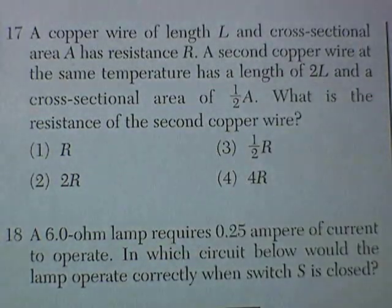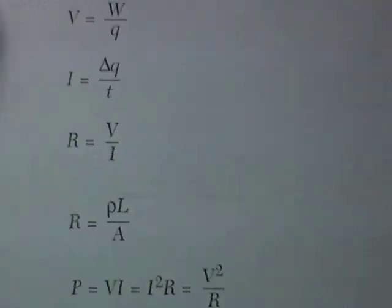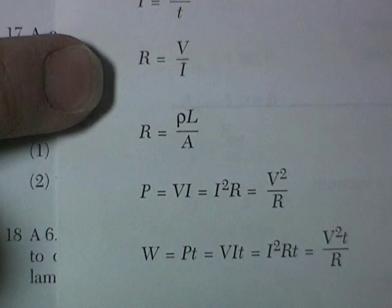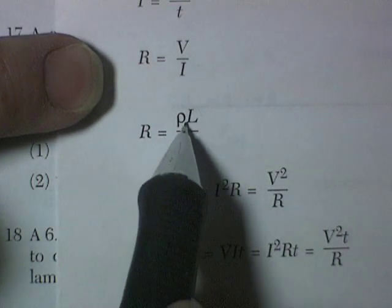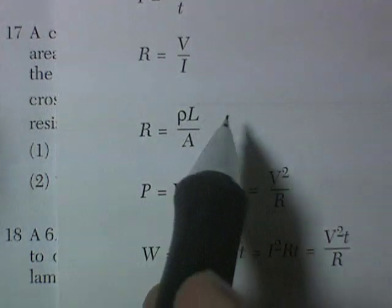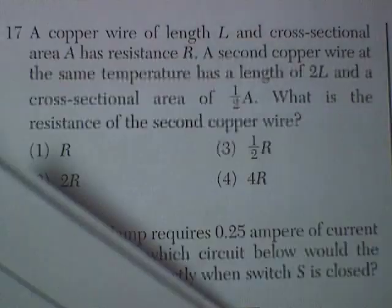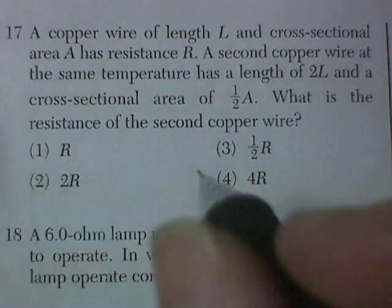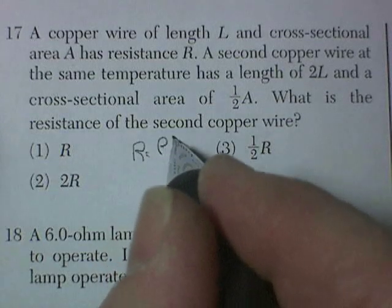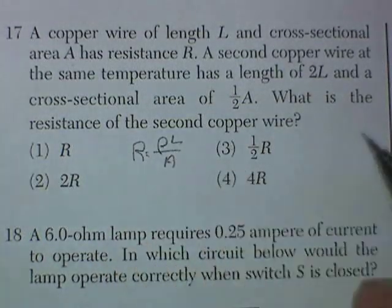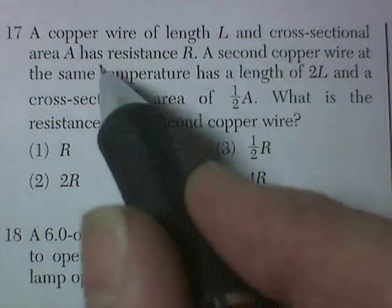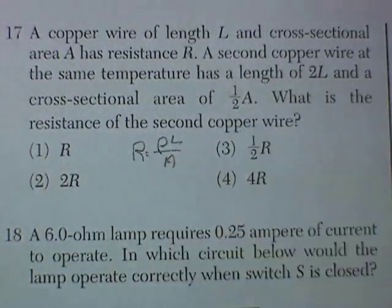So let's go find the formula that deals with resistance, and there it is. Resistance is equal to resistivity times the length divided by the cross-sectional area. So we write that formula down, R equals rho L over A, and so length L, cross-sectional area A, and resistance is R.